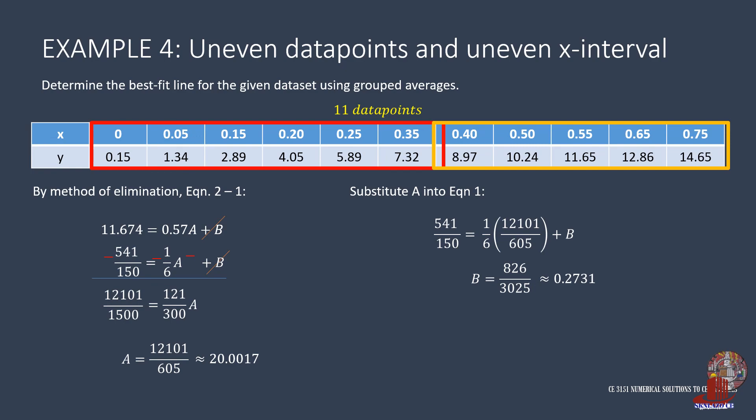Thus, Y is then 20.0017 of X plus 0.2731 in the linear form.